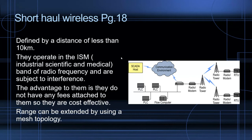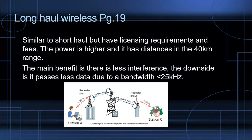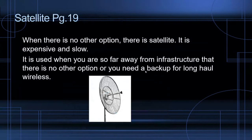Long-haul wireless is similar to short-haul but has licensing requirements and fees. With licensing and fees you get more power, allowing transmission up to about 40 kilometers. The benefit is less interference; the downside is less data throughput due to a bandwidth restriction — typically less than 25 kHz. You transmit out and back, losing a little bandwidth in the wireless range, but it's still better than short-haul.